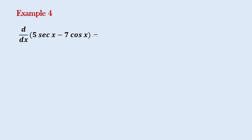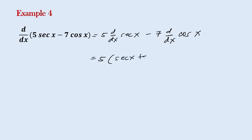For another example, this would be 5 times the derivative of secant of x, minus 7 times the derivative of cosine of x. The derivative of secant of x is secant x times tangent x, and the derivative of cosine of x is negative sine x. Simplifying, we have 5 secant x tangent x plus 7 sine x.